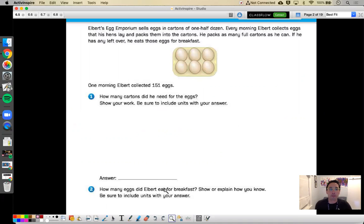So there are many ways to solve this problem. And this is when actually being in school with other students around can be super helpful. But again, we'll do the best we can. Starting with what we know. So we know that Egbert collects eggs in a half dozen. The picture helps us to remember that a half dozen means six eggs. And then we know that he packs the cartons as full as he can. If he has any leftover, he eats those eggs for breakfast. So we also know that he collected 151 eggs. So that's what we know.